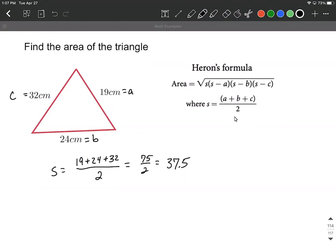Next up, let's go ahead and fill into that area formula. So it's going to be the square root of s, 37.5, multiplied by 37.5 minus a, which is 19, multiplied by 37.5 minus b, in my case 24, and 37.5 minus c, which is 32.